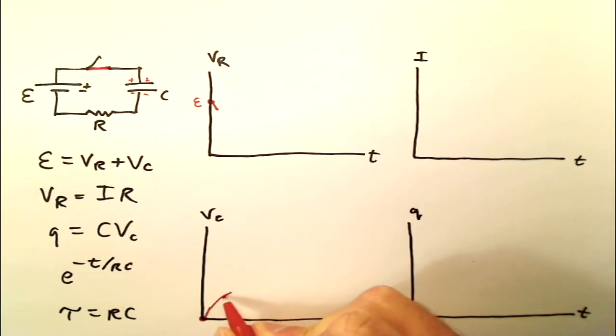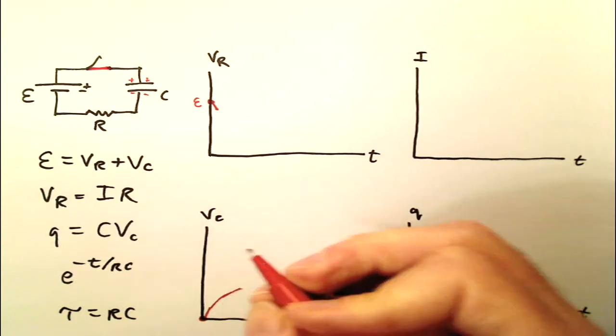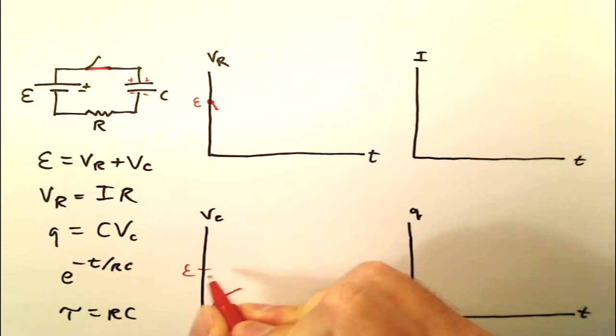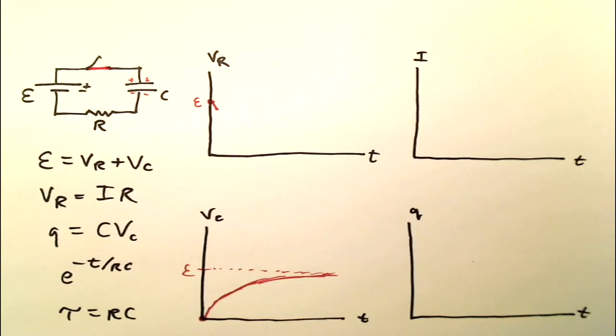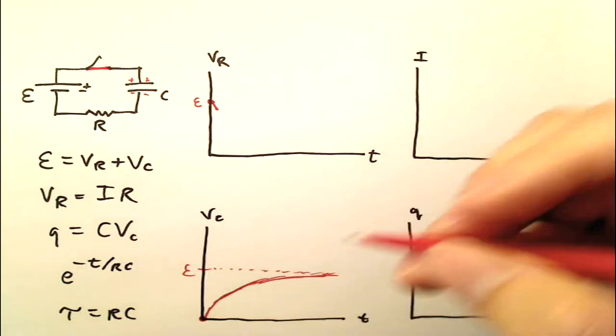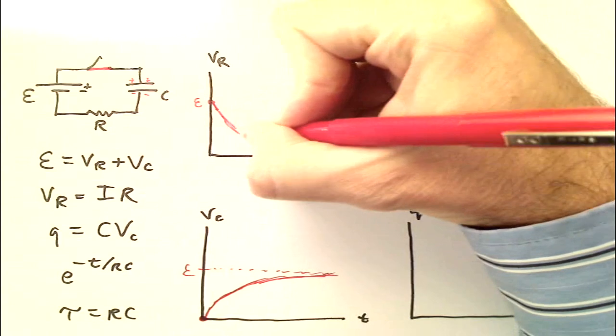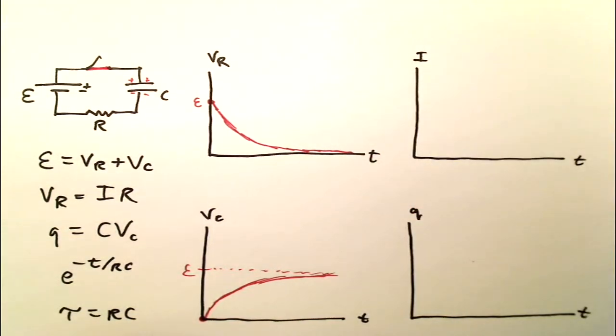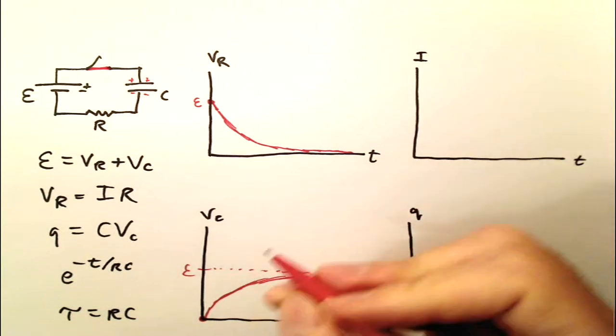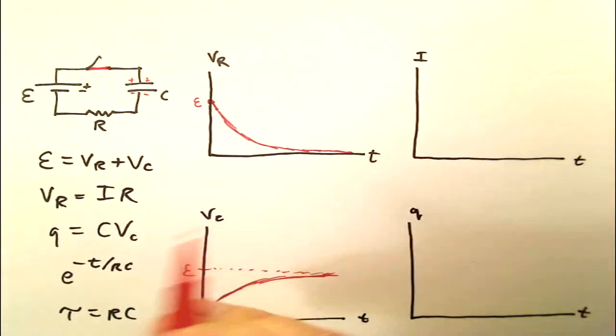So it's going to keep climbing, but not quite as quickly. Now eventually we know that it has to equal E, but it's going to approach E asymptotically, like that. Now of course the VR has to shrink exactly at the same rate that the VC is increasing, so the VR is going to drop and the VR is going to approach zero asymptotically. So when T is very large, the VC is basically E, and the VR is basically zero, and you still have VR plus VC equals E.